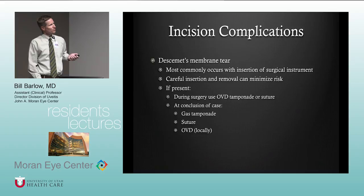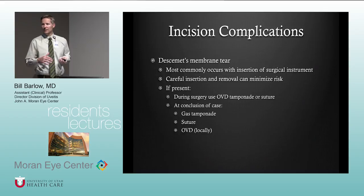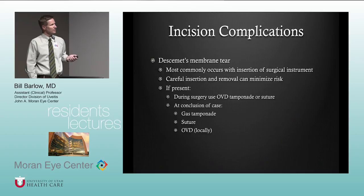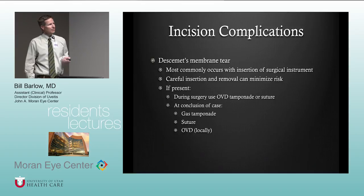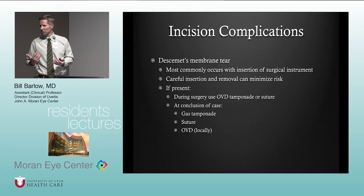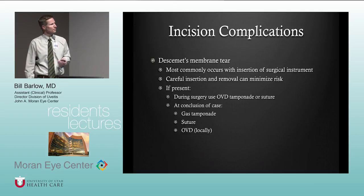A Descemet's membrane tear will most commonly occur with insertion or removal of surgical instrumentation — be careful to minimize that risk. If it presents during surgery, use viscoelastic to tamponade it. You might be able to use a single suture to hold it in place. At the conclusion of the case, you can use gas, suture, or small amounts of viscoelastic. Very small tears will usually hold themselves in place with wound hydration and BSS placed in the AC. More extensive tears require something to hold them in position.